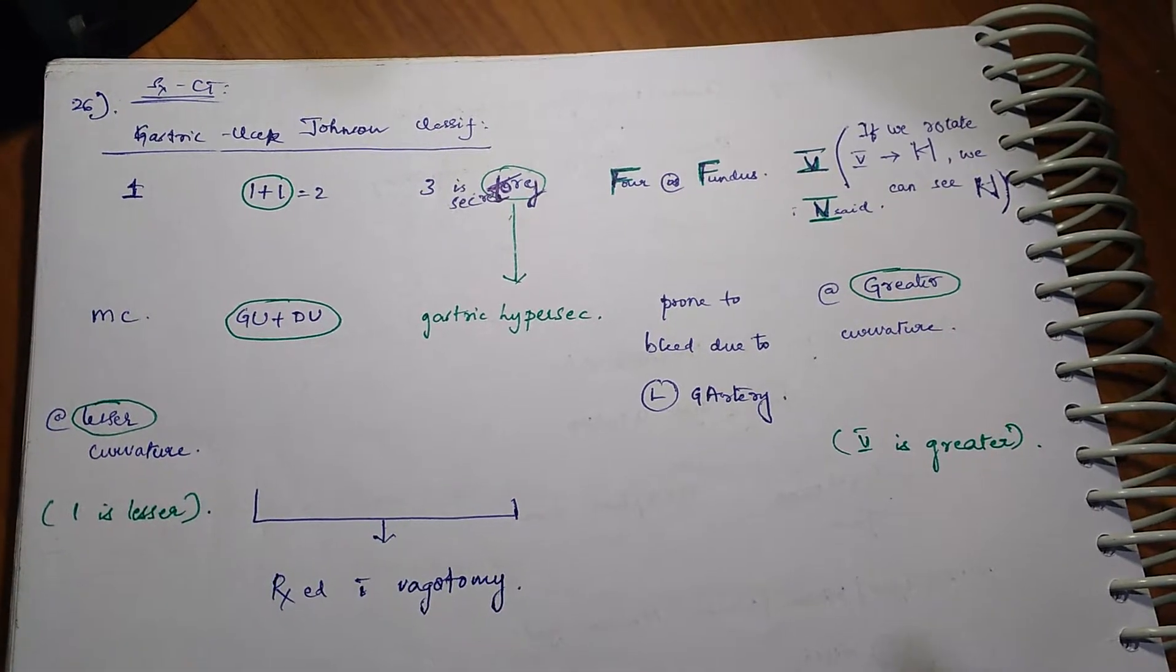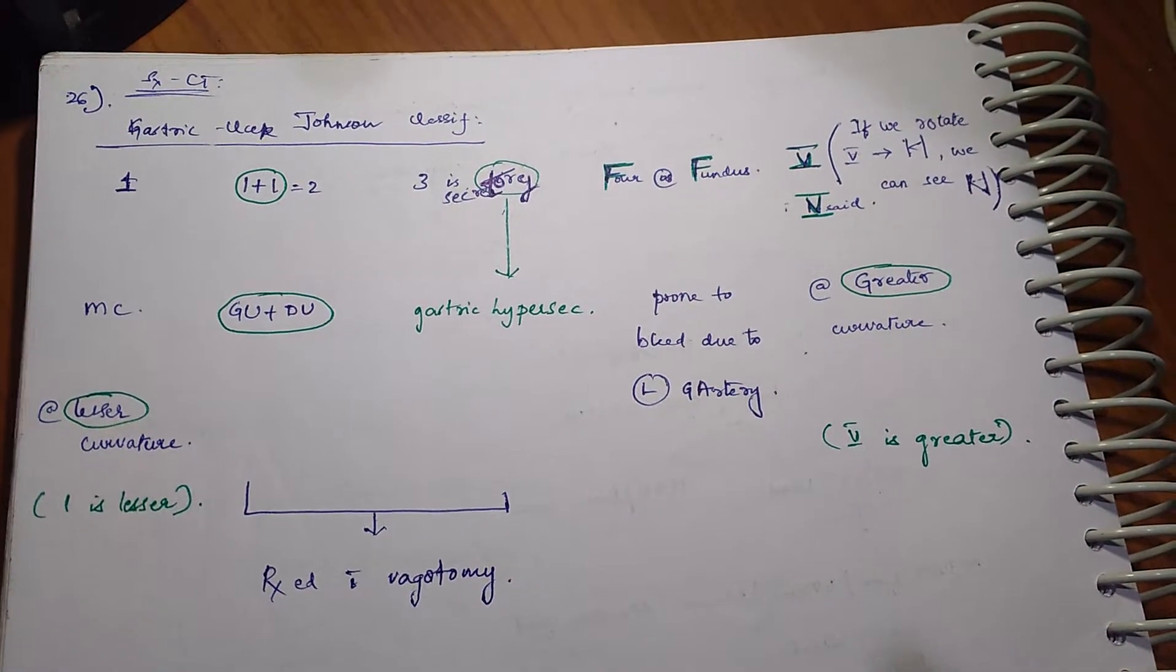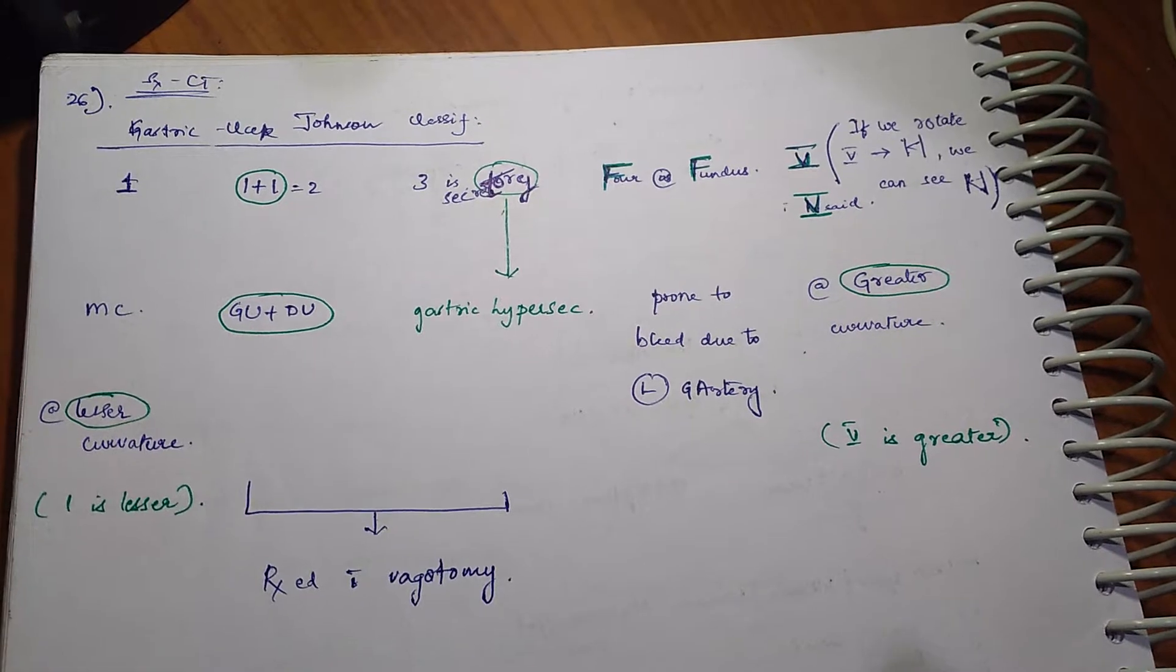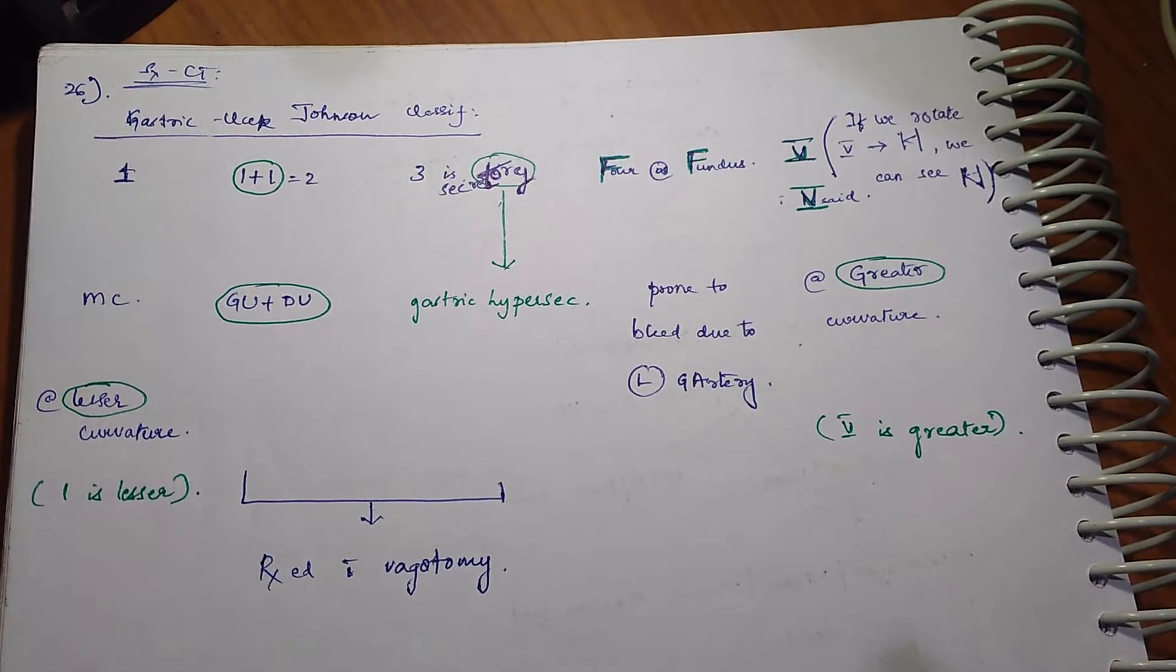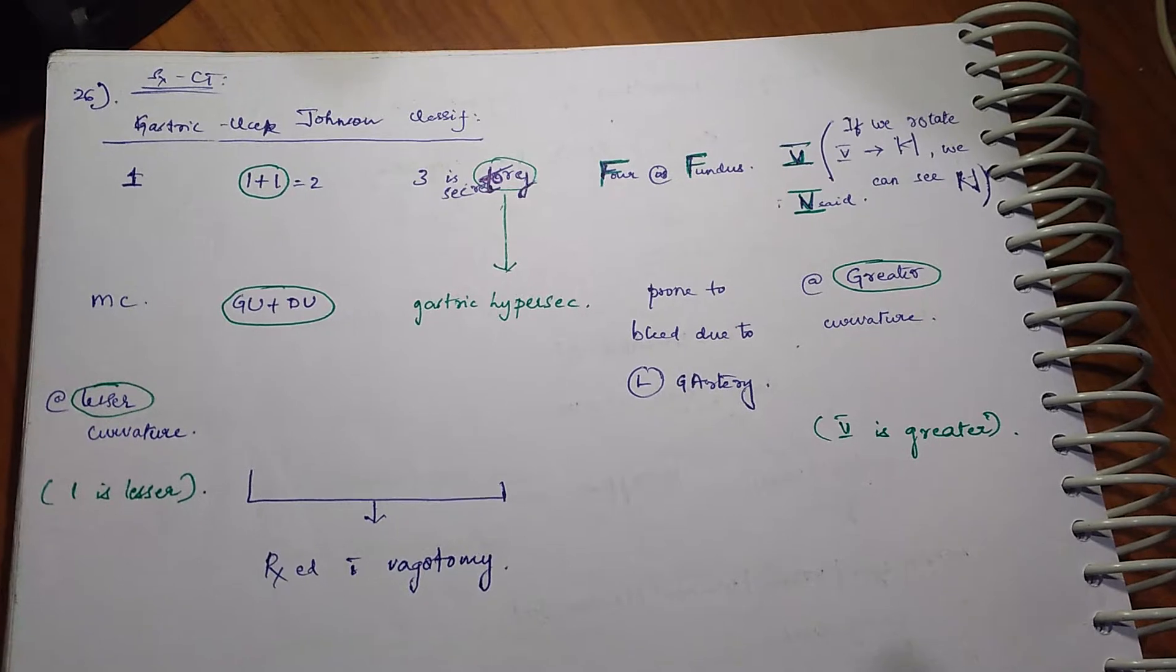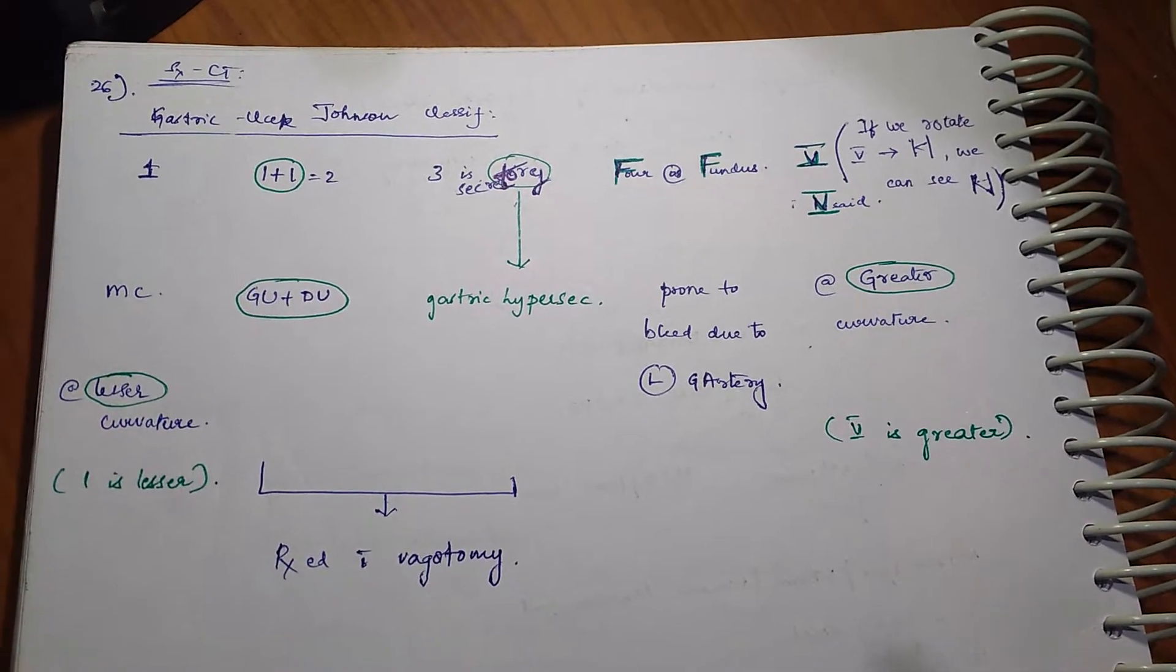Type 5, if you rotate it, the number 5 looks like N. So it is NSAID related and also as it is a greater number, it occurs at greater curvature.